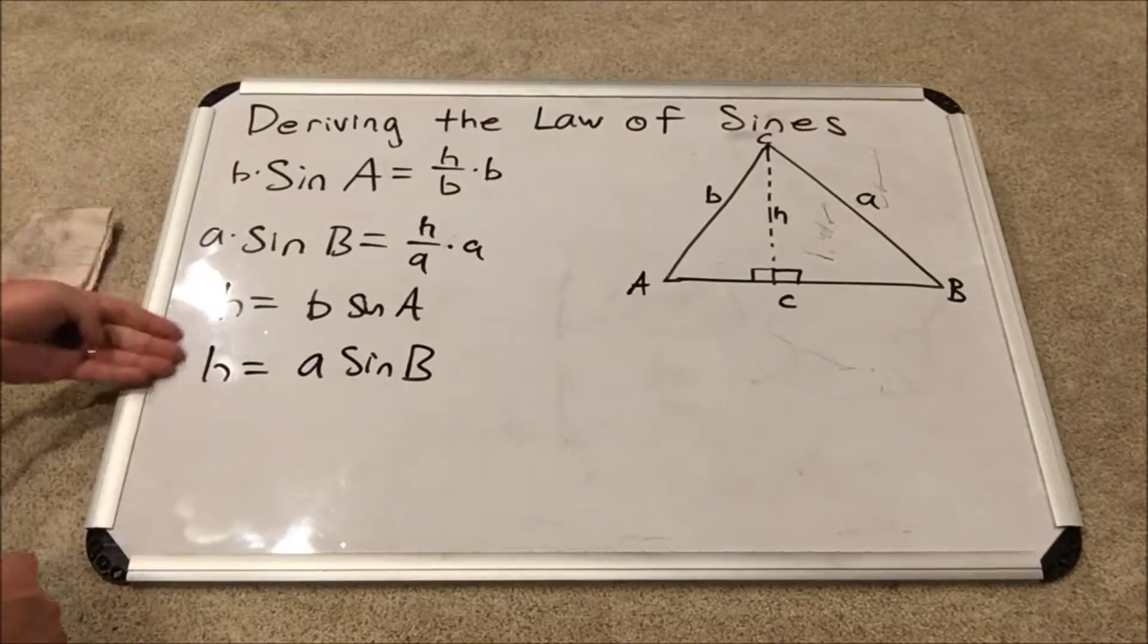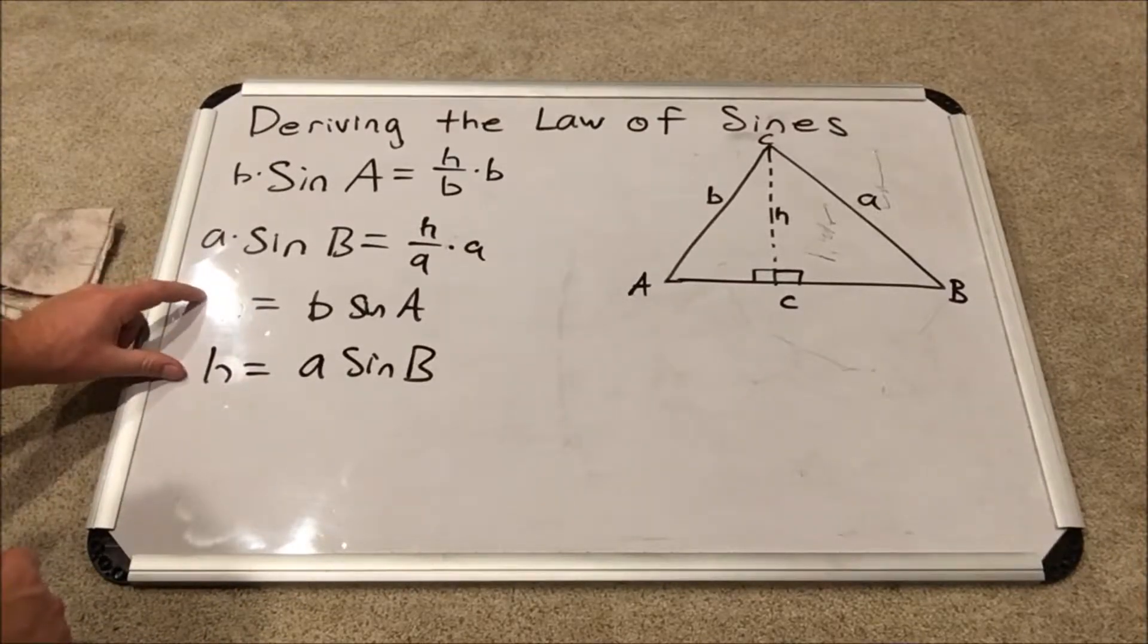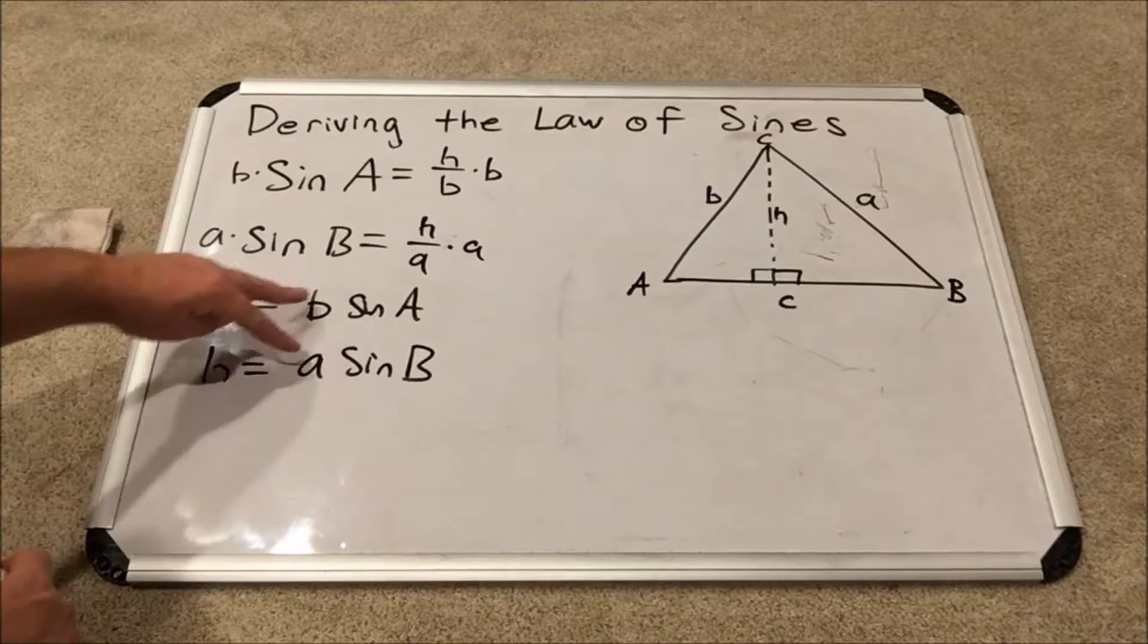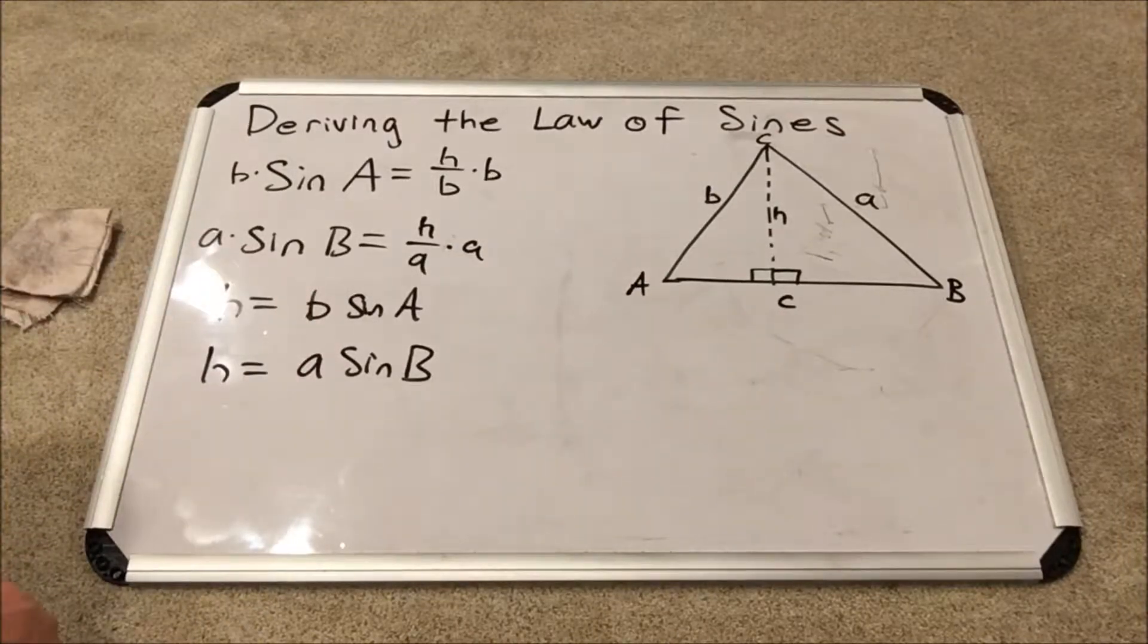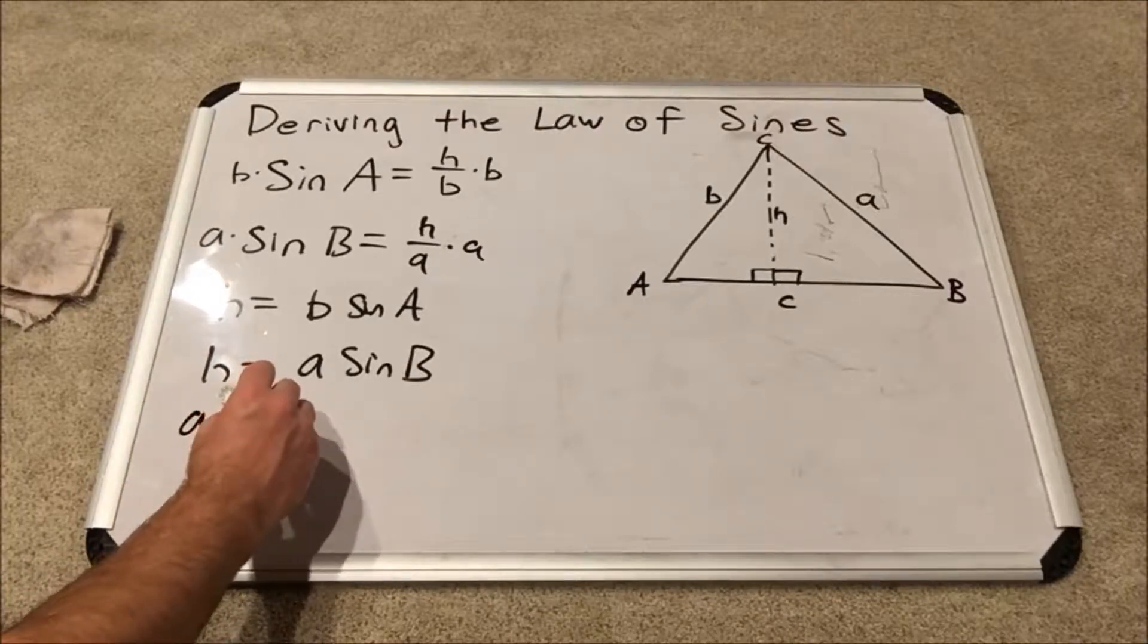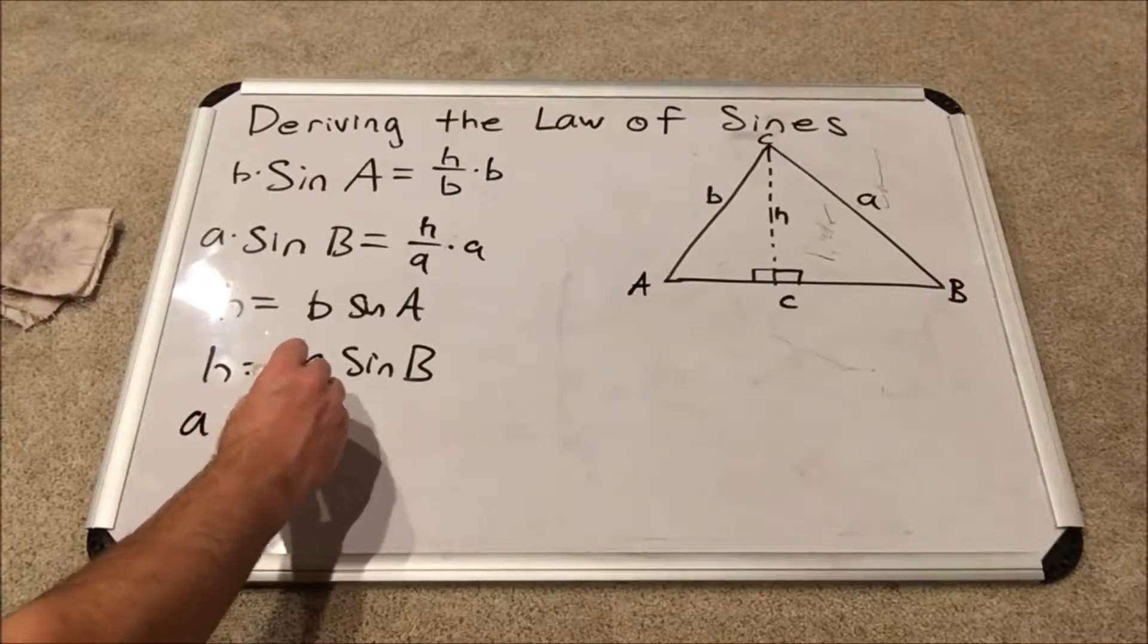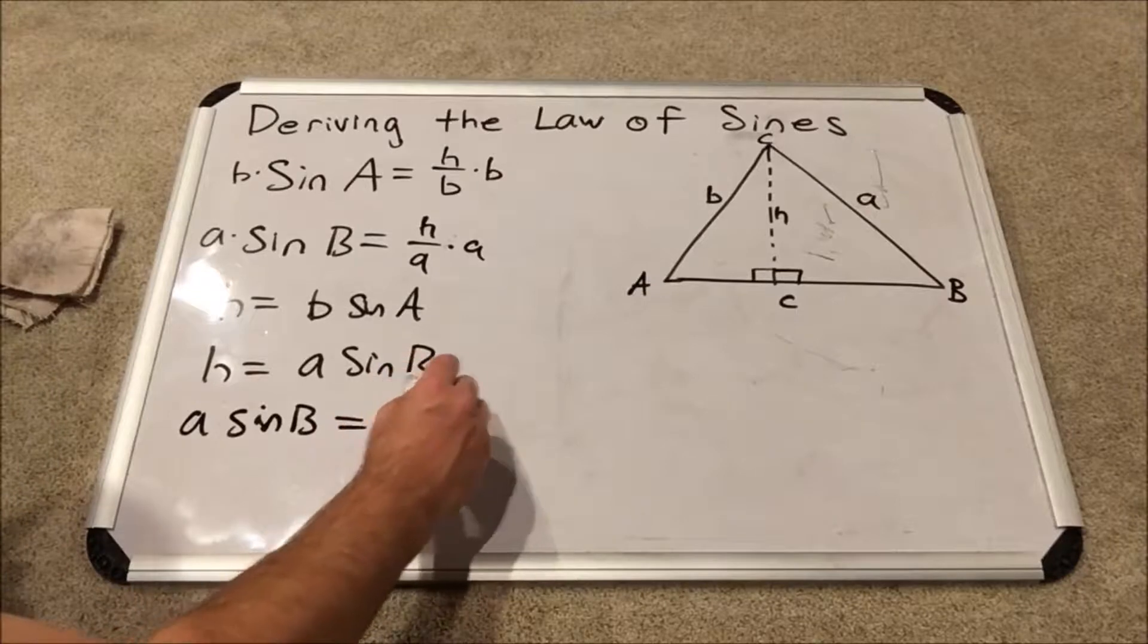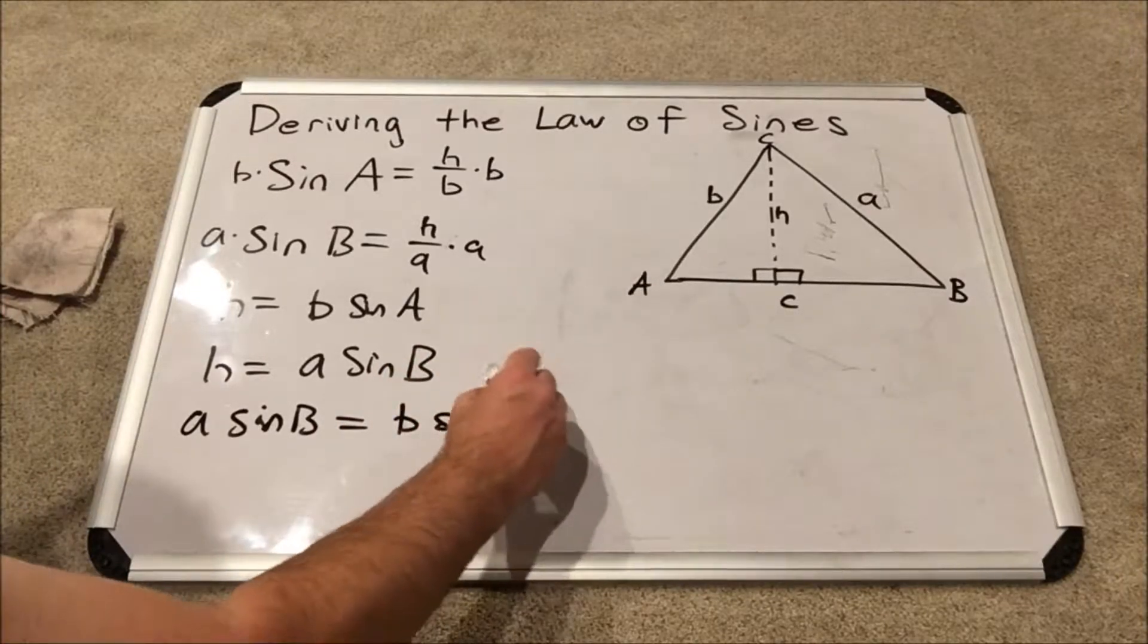Now, by the transitive property, if H equals two separate things, those two separate things are equal to each other. So now, therefore, we have A sine B equals B sine A.